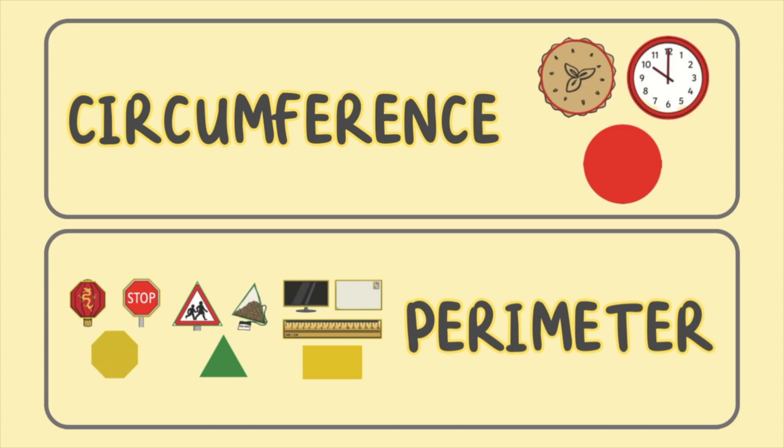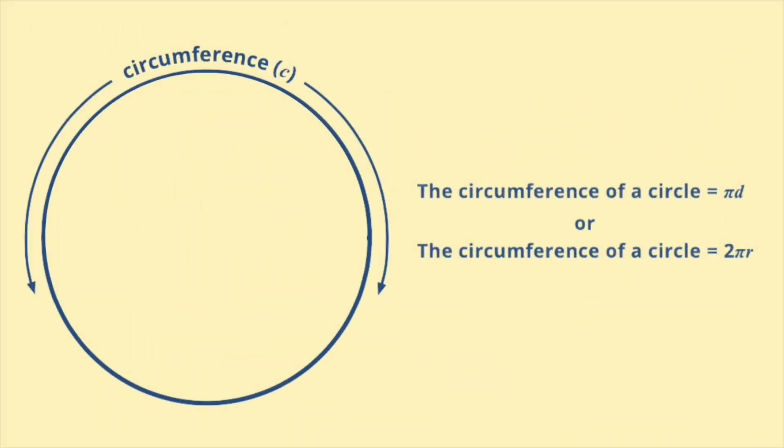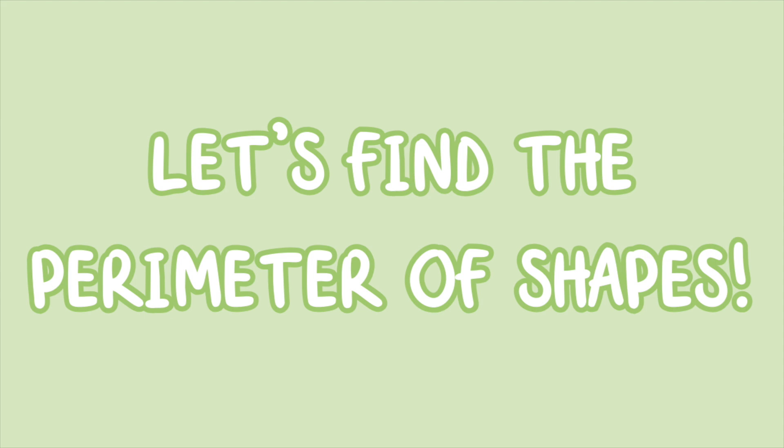The formulas for calculating perimeter vary based on the shape, but circumference involves measuring around a curve. Now that we've got the basic information out of the way, let's learn how to find the perimeter of different shapes.